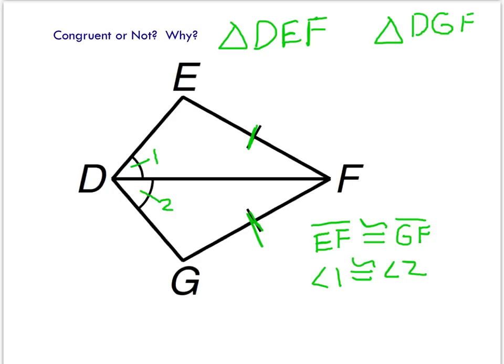So now we have a pair of sides and a pair of angles. We also have, just like in the previous example, a shared side up the middle: DF. That means in both triangles, DF is congruent to itself. So we've got a pair of sides, a pair of angles, and a shared side — it seems like this might follow side-angle-side. However, angles 1 and 2 are not included angles.